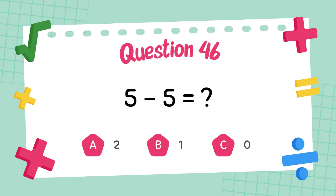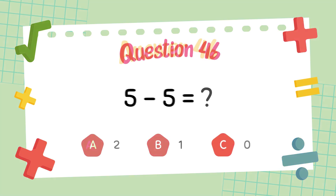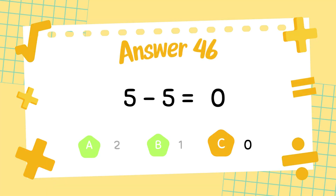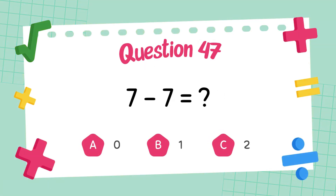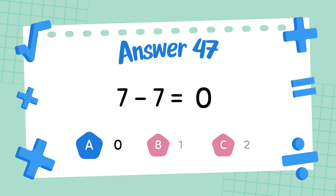What is 5 minus 5? The answer is 0. What is 7 minus 7? The answer is 0.